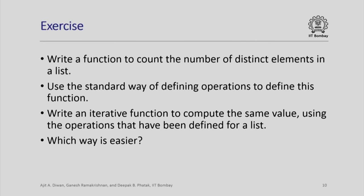We can try many different functions using these operations. As an exercise, try to write a function to count the number of distinct elements in a list. You can do this in two ways: one is the standard recursive way — defining it for the empty list and, assuming it is defined for list l, defining it for a list obtained by pushing element x onto l. Alternatively, write an iterative function using the already-defined list operations. Try to see which way you find easier; both are valid, but some ways are more convenient than others for different functions.